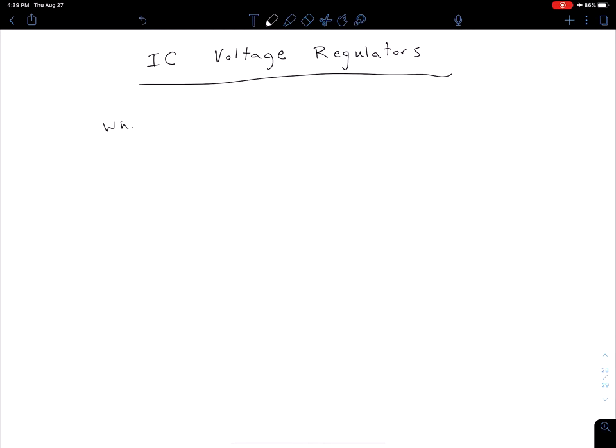What if we want a regulated output Vout that is different from Vout provided by the IC available? What do we do in that situation?